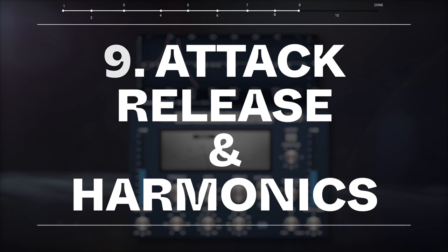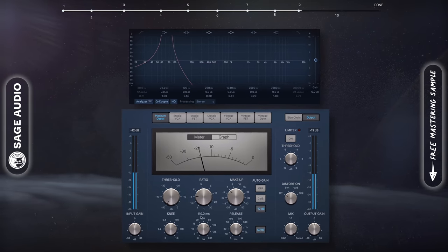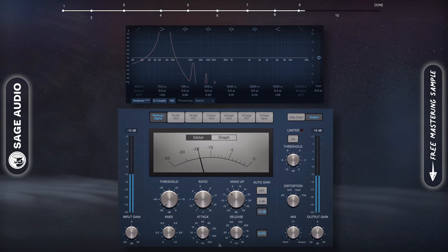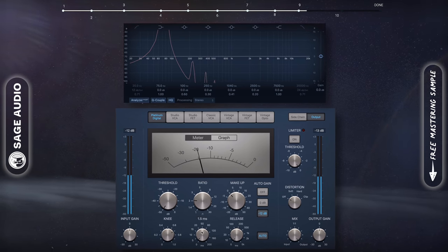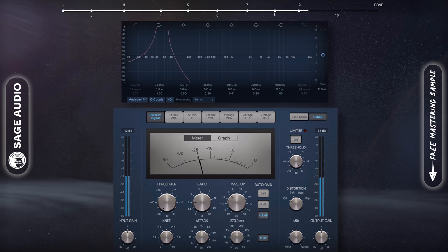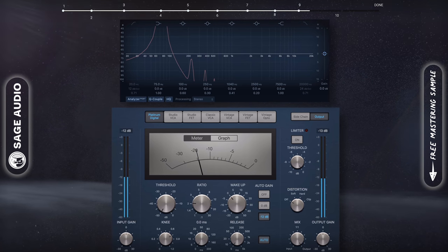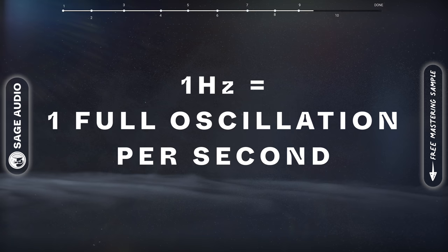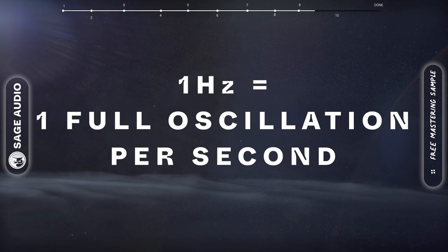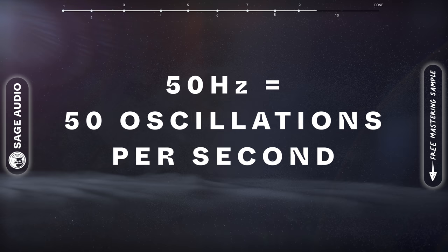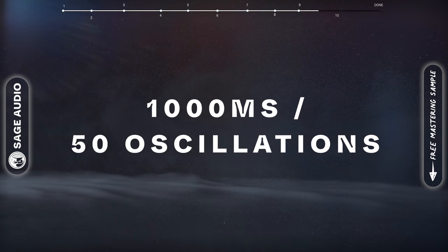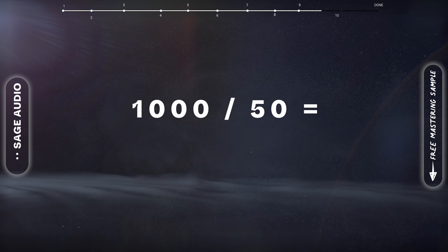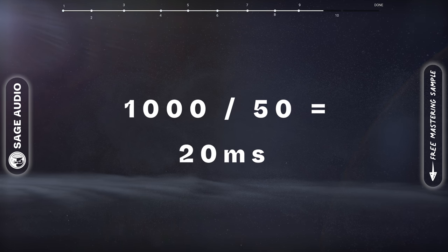Attack, Release, and Harmonics. Now that we understand the different compressor types, let's look at how and why the attack and release functions on downward compressors cause or avoid distortion. As we covered earlier, shorter attack and release times increase the amplitude and sometimes number of harmonics, while longer times do the opposite. The reason being, at short enough attack and release times, the compressor is working faster than the full length of the waveform. Since 1Hz equals 1 full oscillation per second, we can say that a 50Hz wave has 50 oscillations in 1 second. Let's divide 1000ms, or 1 second, by these 50 oscillations to see how long 1 oscillation takes — 1000 divided by 50 equals 20ms per oscillation.